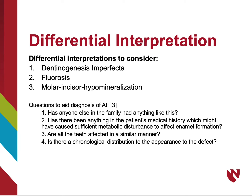Some differential diagnoses to consider with AI would be dentinogenesis imperfecta, fluorosis, and molar incisor hypomineralization. A few questions to ask to aid in the diagnosis of AI are: Has anyone else in the family had anything like this? Has there been anything in the patient's medical history which might have caused sufficient metabolic disturbance to affect enamel formation? Are all the teeth affected in a similar manner? And is there a chronological distribution to the appearance of the defect?